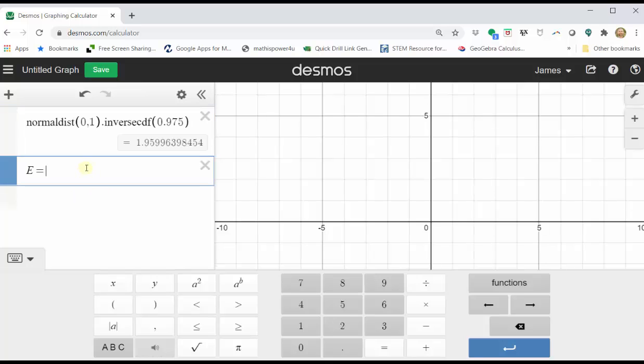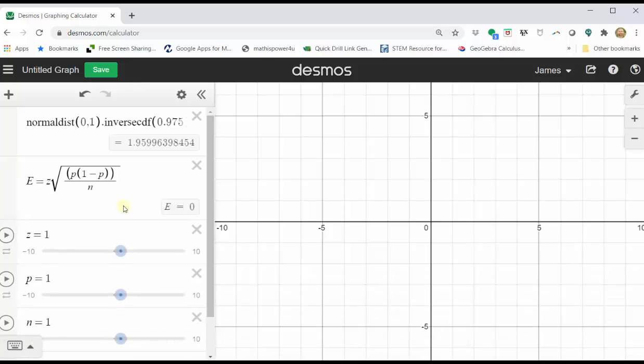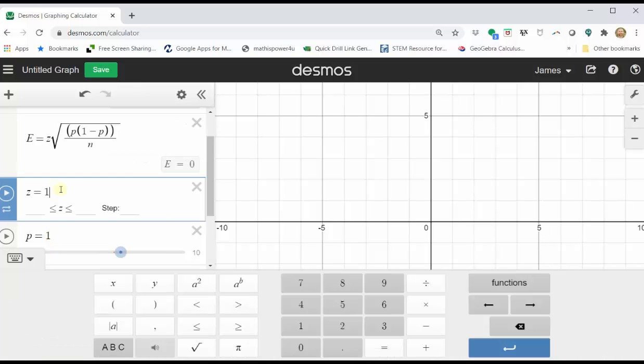we enter E equals z square root, open parenthesis, p, open parenthesis, one minus p, close parenthesis, close parenthesis, divided by n. Notice below we have an option to add sliders for z, p, and n. Click All, and now we enter z, p, and n to determine the error. Let's close the Desmos keypad.